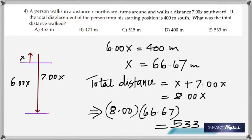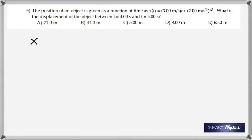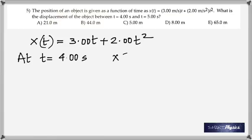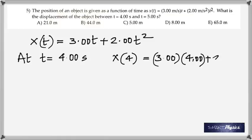Number 5: the position of an object is given by x(t) = 3t + 2t². What's the displacement between 4 seconds and 5 seconds? Substitute t = 4 to find x, then substitute t = 5 to find x, and the displacement is just the difference between the two.